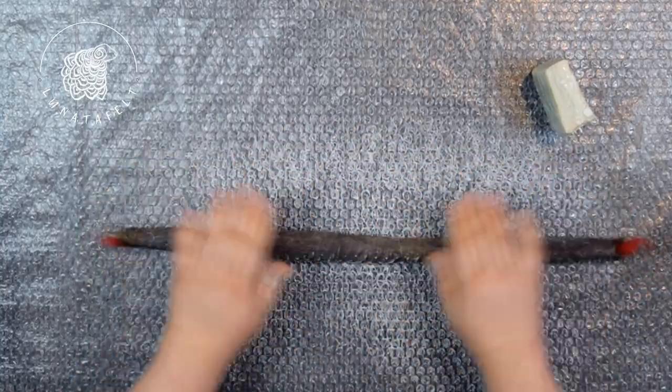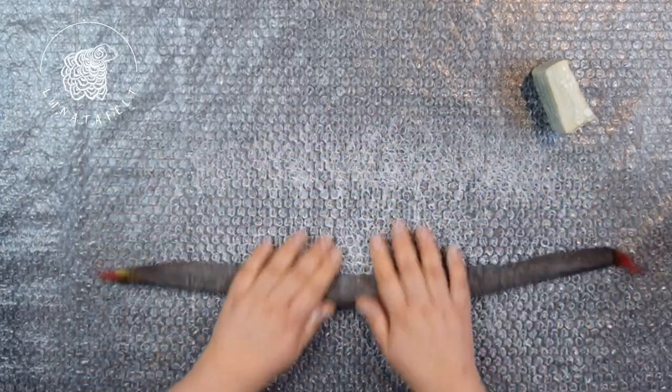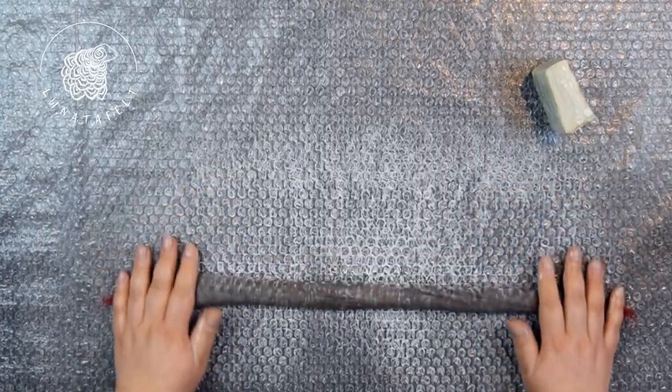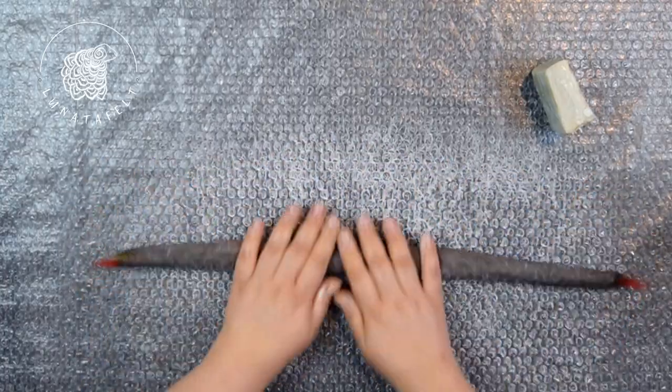Since this cord will be multi-layered, the felting technique itself doesn't change. We carefully, initially without pressure, then gradually increasing it, roll the wool on the table surface, thereby gradually compacting it.